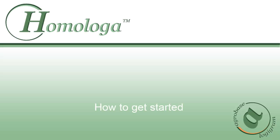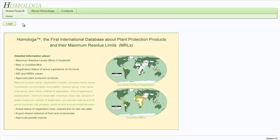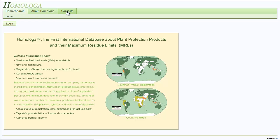Hello and welcome to this video tutorial on how to get started with the new version of Homologa. Once you have this page open, you can see that we have three tabs in the horizontal top menu bar: the Home and Search tab, the About Homologa tab, and the Contacts tab.